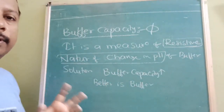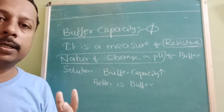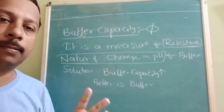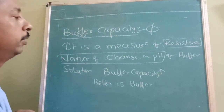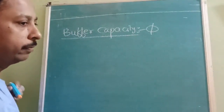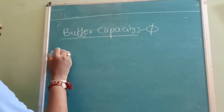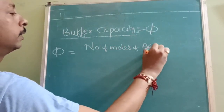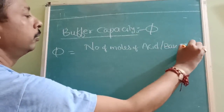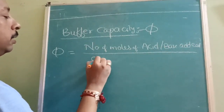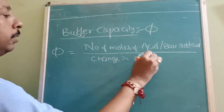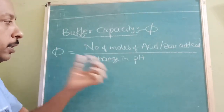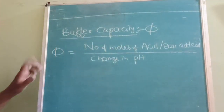We should select a buffer whose buffer capacity is very high — that means it can keep its pH constant even after a large amount of acid or large amount of base. Buffer capacity formula: β = number of moles of acid or base added divided by the change in pH. For example, if 3 moles are added and change in pH is 0.1, then buffer capacity = 3 / 0.1.